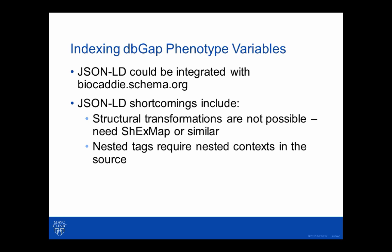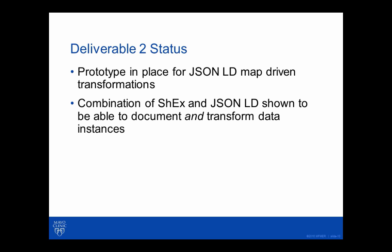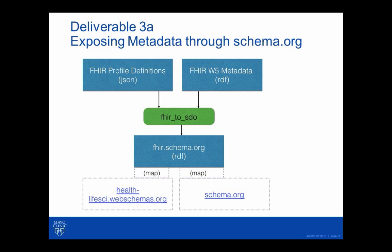To accomplish this transformation, short term we just wrote some Python code. In the longer term, we believe that something called a shape expressions map will help with those sorts of RDF micro-transformations needed to get it converted. We've shown that contexts in JSON-LD could do it, and one of our next steps is to actually start getting those transformations.